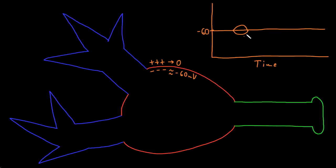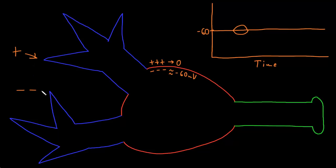These transient membrane potential changes are called graded potentials. They tend to occur in the dendrites and the soma of the neuron. The size and duration of the graded potentials is determined by the size and duration of inputs — both excitatory inputs and inhibitory inputs.